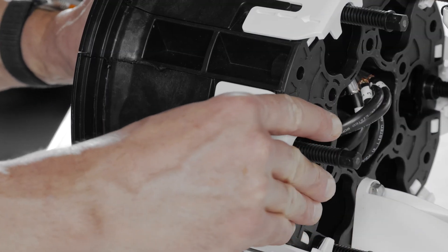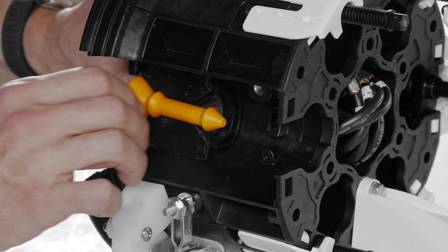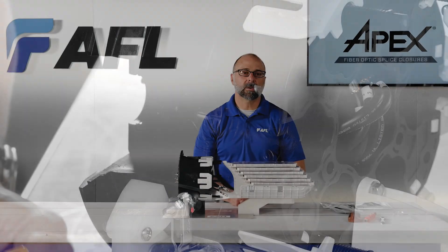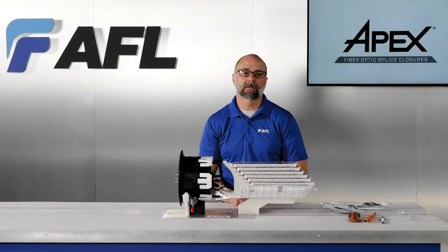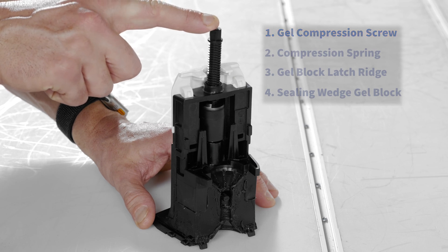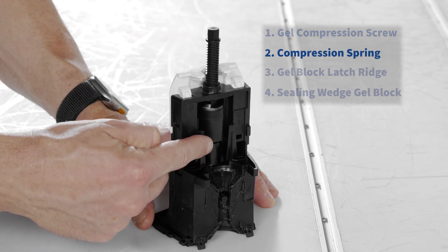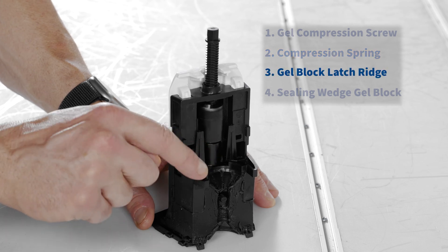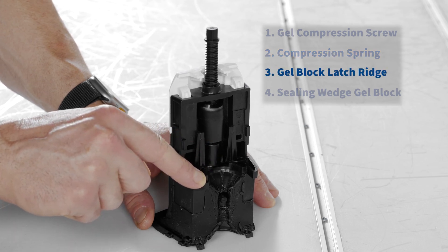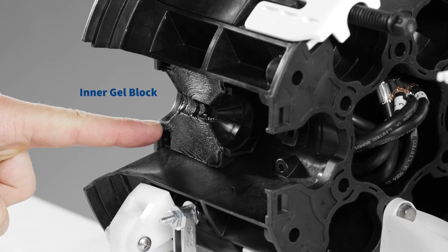Gently pivot the sealing wedge from the hinging at the bottom of the wedge. Try to hold the orange port plug in place to secure the inner gel. The sealing wedge has four main components: gel compression screw which compresses the gel blocks, compression spring which maintains constant pressure sealing through thermal changes, gel block latch ridge which engages the inner gel block to ensure uniform compression, and sealing wedge gel block which mates to the inner gel block for sealing.